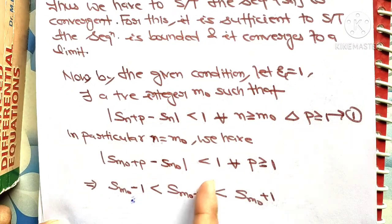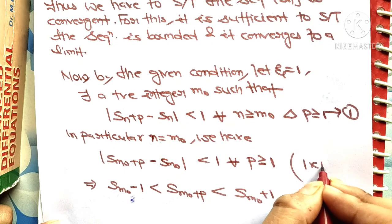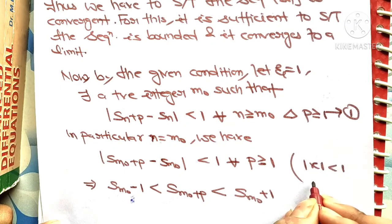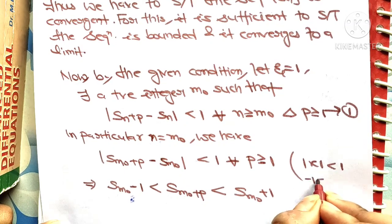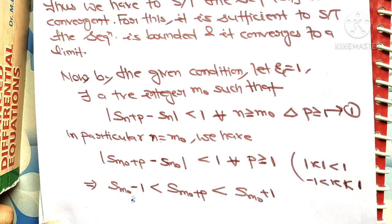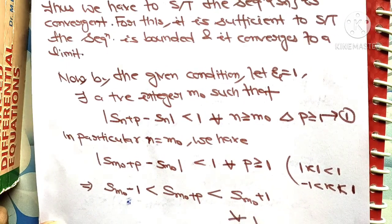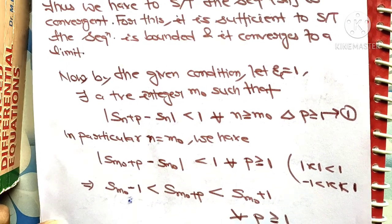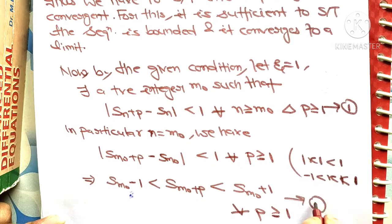This is how we open the modulus: if |x| < 1 then −1 < x < 1, and similarly here. So Sm₀ − 1 < Sm₀+p < Sm₀ + 1 for all p ≥ 1. Call this equation 2.